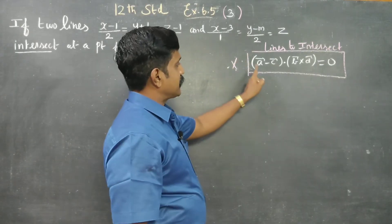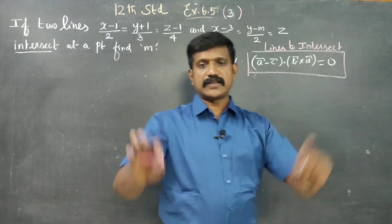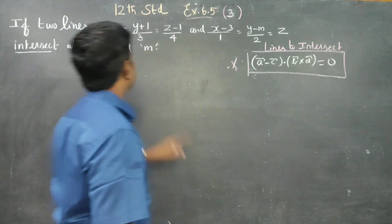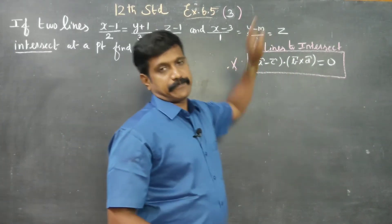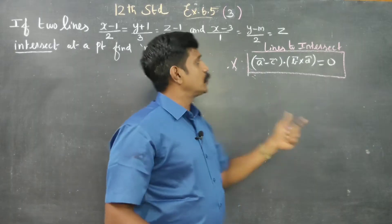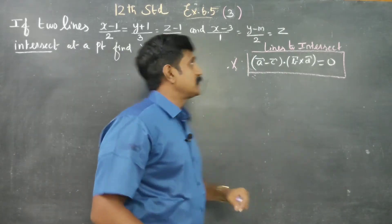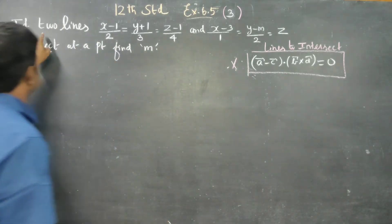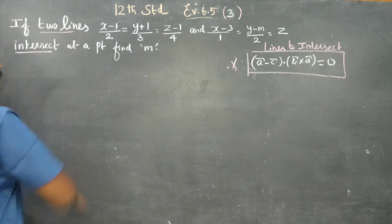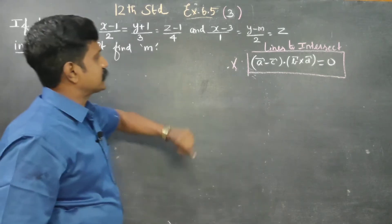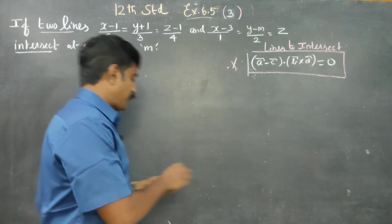So the condition for intersecting lines is: (a minus c) dot (b cross d) is equal to 0. Using this condition, we are going to find the value of M. They have declared the two lines are intersecting and are asking us to find just the value of M.